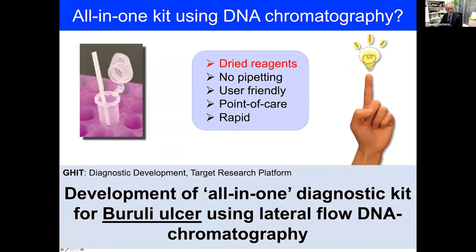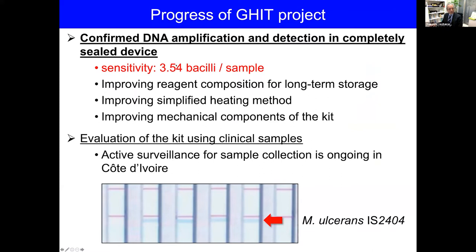All important reagents can be fixed in the kit as dry reagents. We are now developing this for the simplest application. We are working on a fully, completely sealed device. We have already demonstrated that DNA amplification and detection is possible. Sensitivity is at the level of four bacilli per sample. We can detect under long-term storage conditions, and we need to ramp up heat to about 60 degrees. We are thinking about improving a simplified heating system. In the kit, you need to operate a small tab, and we are in the process of making this even simpler.